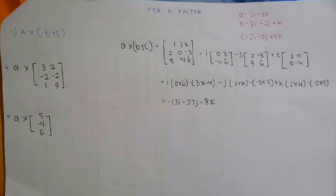Selepas tu kita akan selesaikan jalan kira matrix. A kali B tambah C. A kita susun siap ke laju. I, J, K. Selepas tu kita akan letak A. 2, 0, negatif 3. Dan terlaju kita akan letak 5, negatif 4 dan 6. Kita akan selesaikan secara minor of matrix. Dan jawapan akhir dia adalah negatif 12I, tolak 27J, tolak 8K.